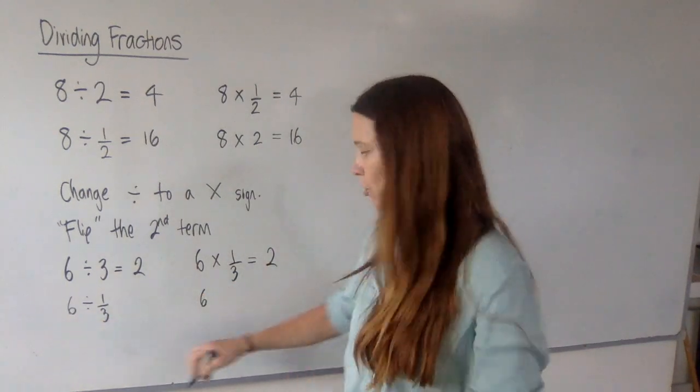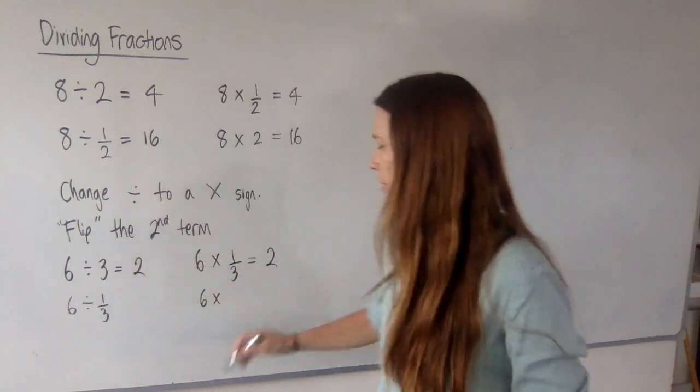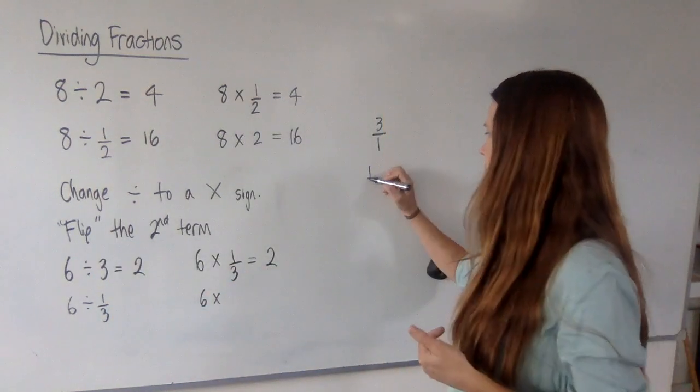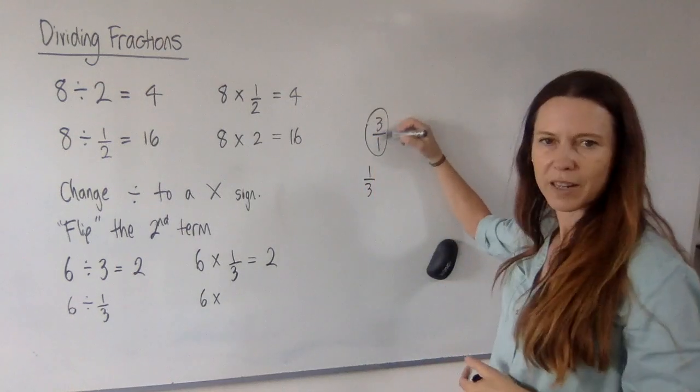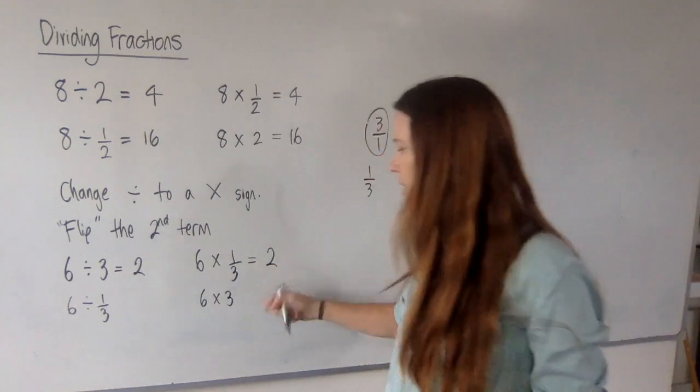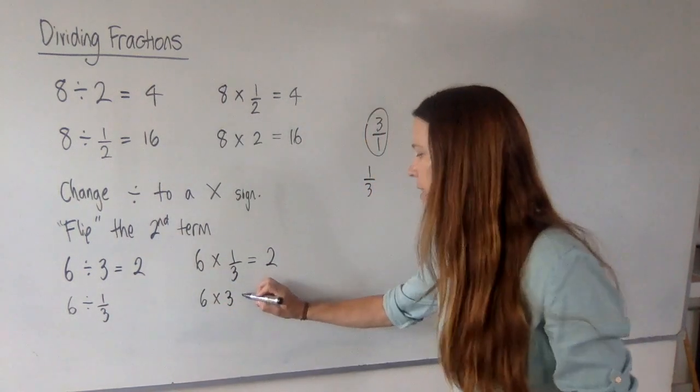If we don't want to do it that way, we can say, hey, I don't like divide. I want to times instead. But to make up for it, I need to flip my third. And what happens when you flip a third? You get this. Which is really just 3 in disguise, isn't it? 6 times 3 is, well, that is a much easier question than this one. But the answers are the same.